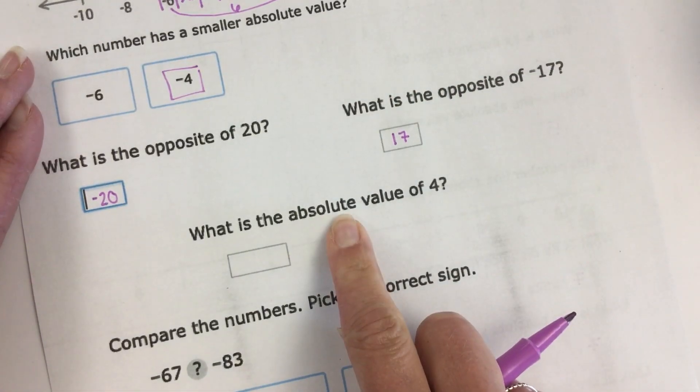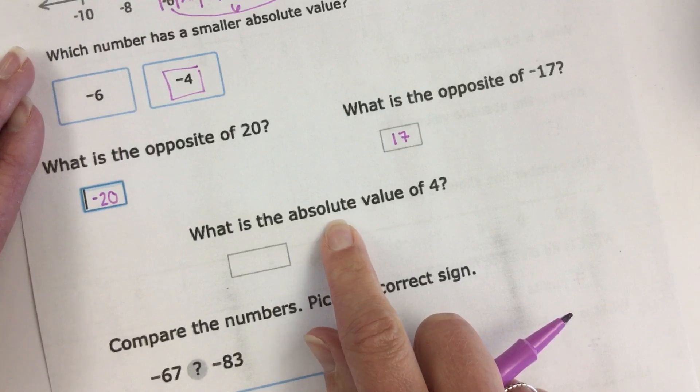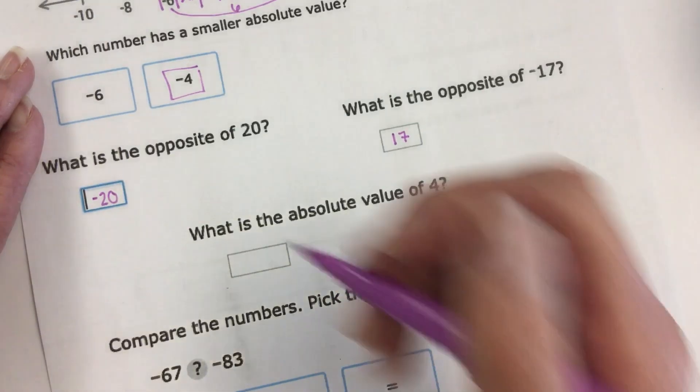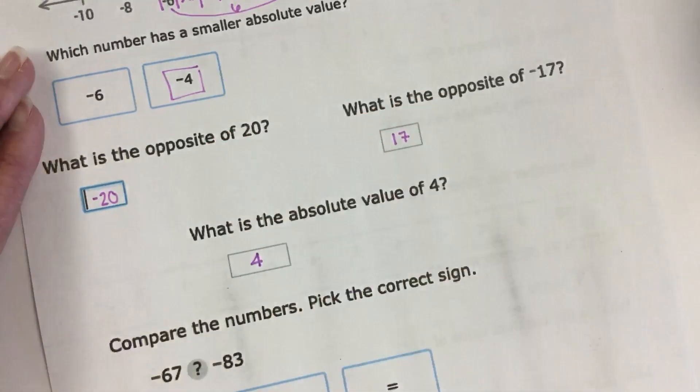Absolute value is not the same as opposite. Absolute value is the distance from zero. How far is positive four from zero? Four units. How far is negative four from zero? Four units.